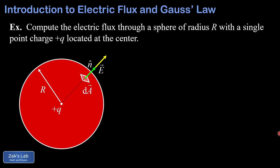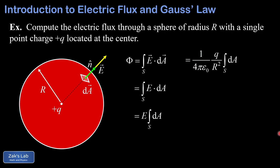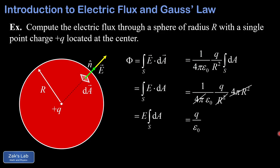We write down our total flux as the integral of E dotted into dA, but the dot product is trivial here. The angle is zero, so we just get the product of magnitudes E times dA. The electric field magnitude is constant over this entire surface since every point is at a fixed distance R from the point charge, so we can pull that constant electric field out of the integral. Plugging in the formula for the electric field generated by a point charge at distance R and computing the integral of dA over the sphere — which is just the surface area four pi R squared — a bunch of terms cancel out, and we find that our total flux simplifies to q over epsilon zero, where epsilon zero is the permittivity of free space.